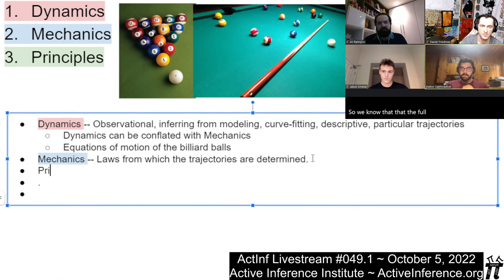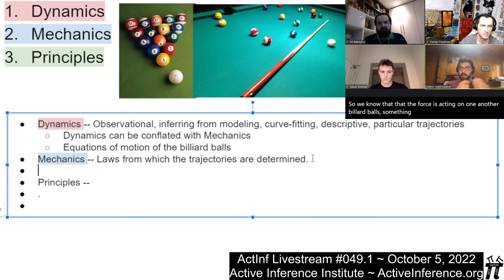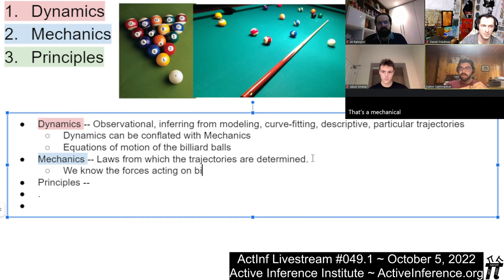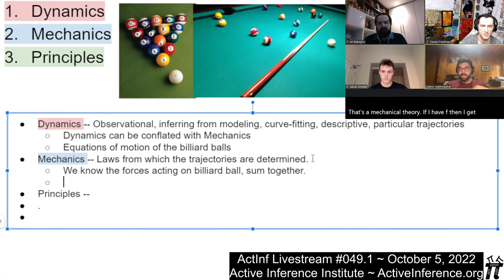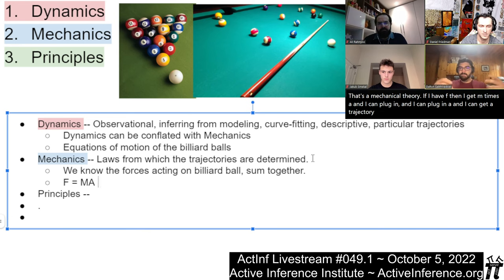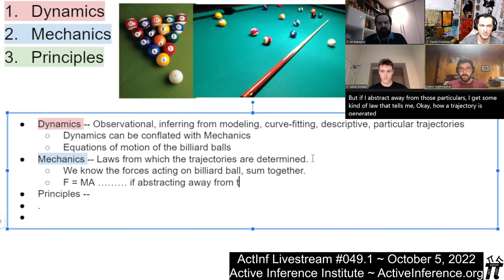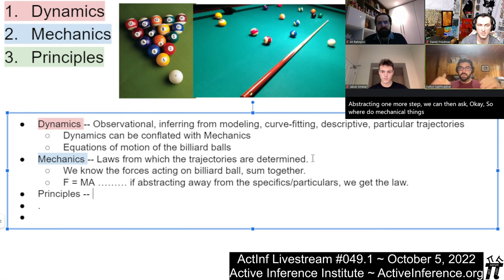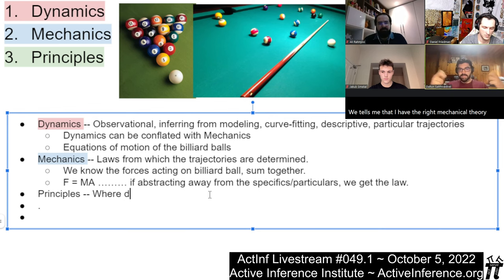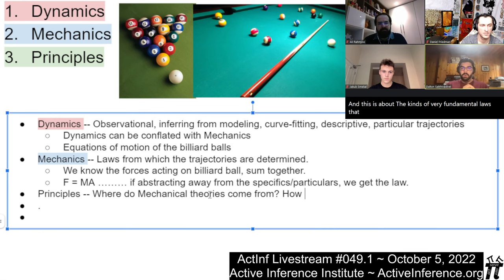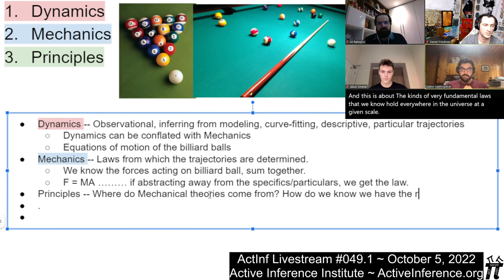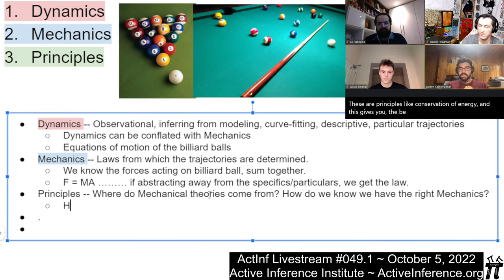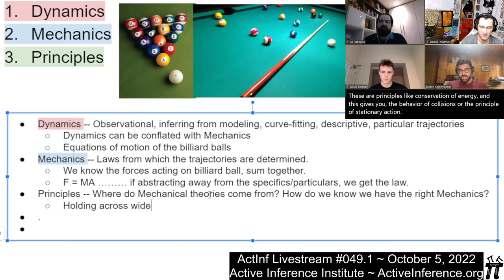Figuring out that trajectory, once you plug in all the boundary conditions — the mass of the ball, the angle of the initial contact — the way that you compose all that information together needs to come from somewhere. That's what I call a mechanical principle. Mechanics are about the laws that give you those trajectories. Newton's law of motion is a mechanical theory: if I have F, then I get M times A. Abstracting one more step, we ask where do mechanical theories come from — these are the very fundamental laws that hold everywhere in the universe at a given scale, like conservation of energy or the principle of stationary action.